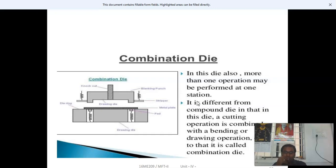The combination die also performs more than one operation at one station. Unlike the compound die, this die combines a cutting operation with a bending or drawing operation. Components include the drawing die, knockout, blanking punch, stripper, metal plate, and pad.